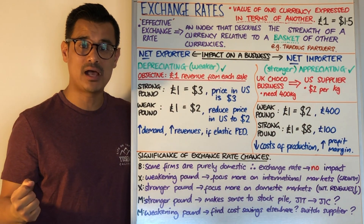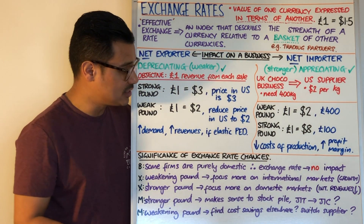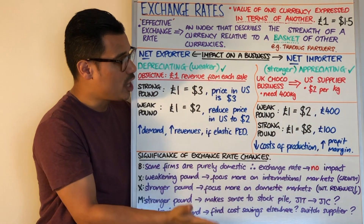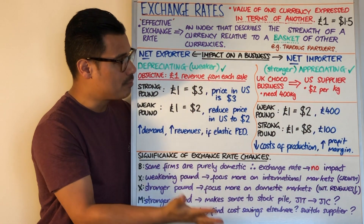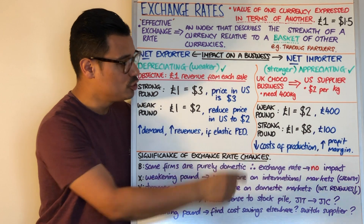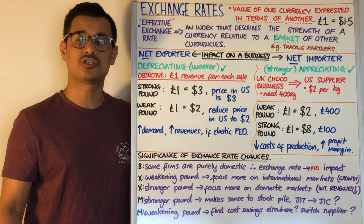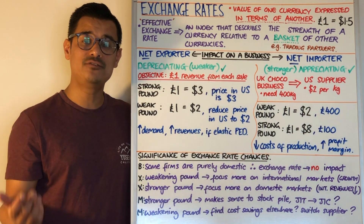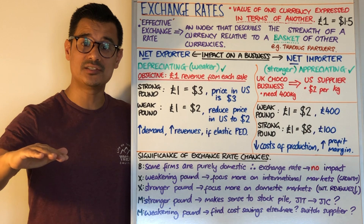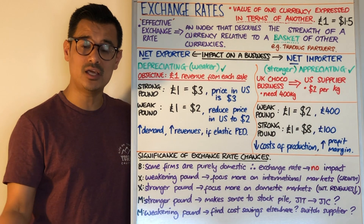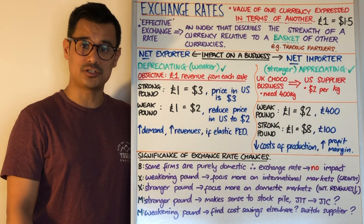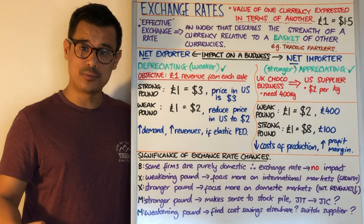So your cost of production has fallen from 400 pounds to 100 pounds — a 300 pound saving in this example. If you're a net importer and you get a stronger, appreciating pound, it reduces your cost of production. And if you leave your prices in the same place, that's going to increase your profit margins.